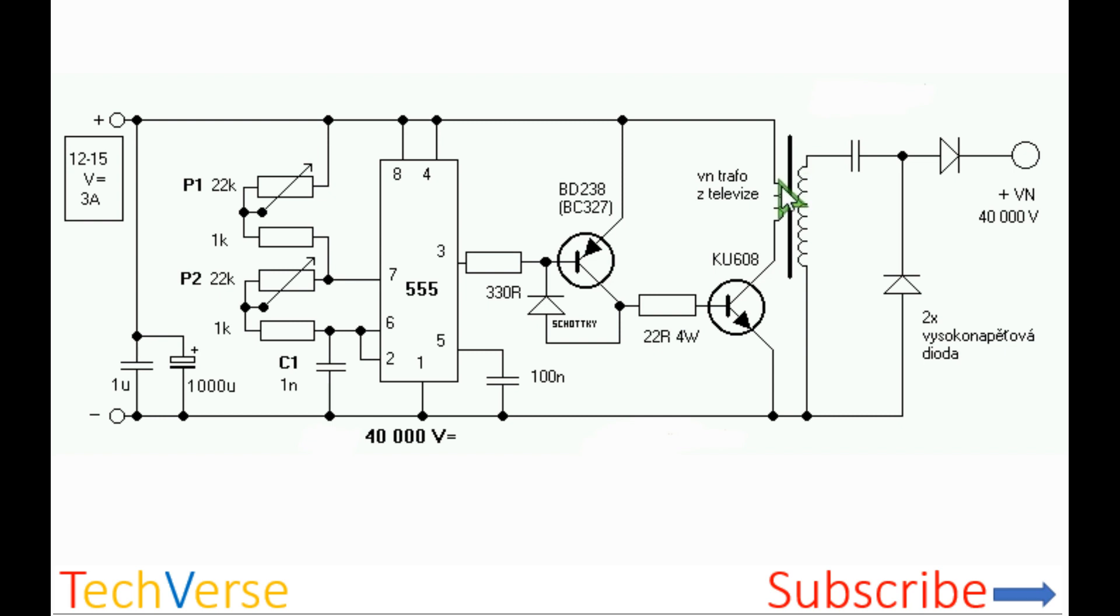At the output, the primary winding should have at least 6 turns, and the secondary should be at least 800 turns. You can wind this on an old flyback transformer core.